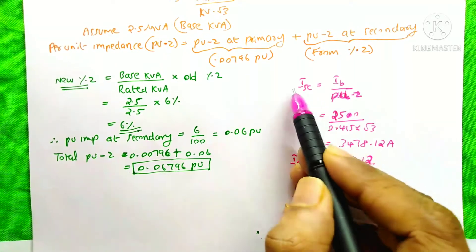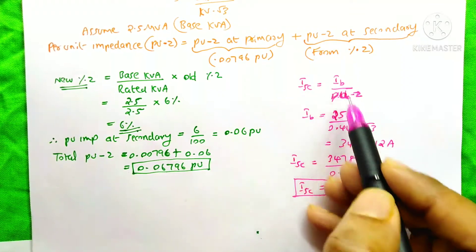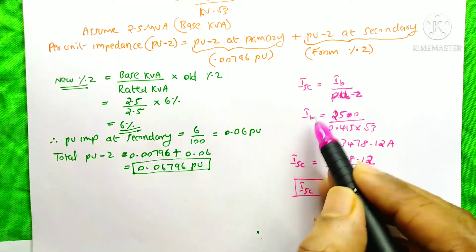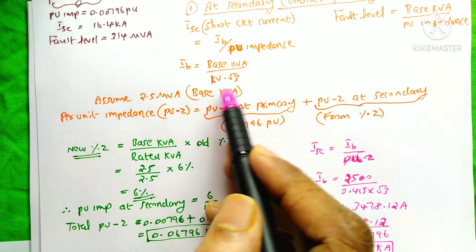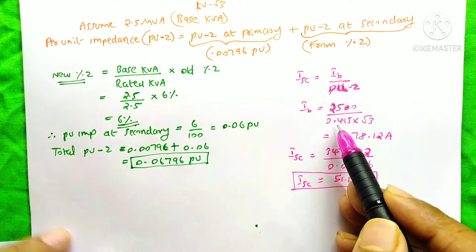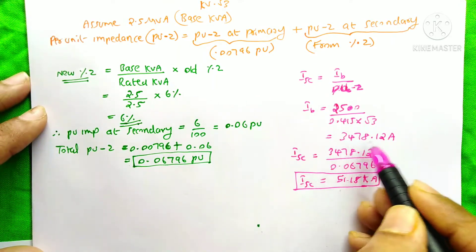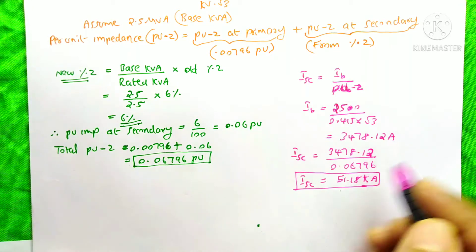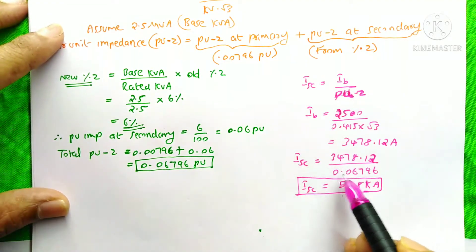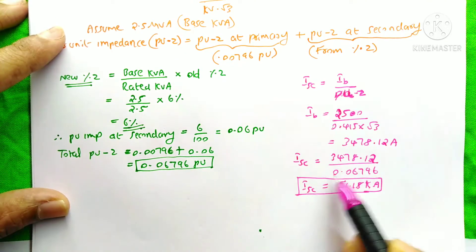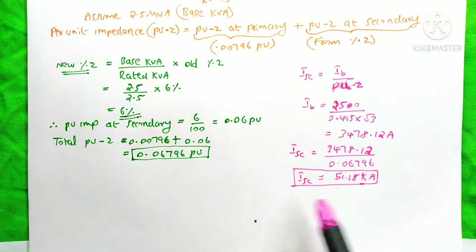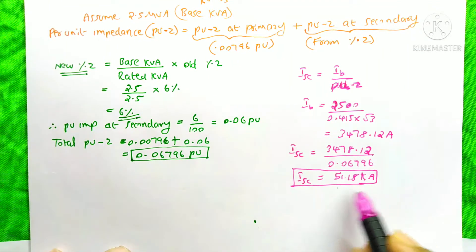For the short circuit current, ISC equals IB divided by per unit impedance. First, we find the base current IB: base kVA divided by kV into root 3, that is 2500 divided by 0.415 into root 3, which gives 3478.12 Amps. Then the short circuit current ISC equals 3478.12 divided by 0.06796, and the answer is 51.18 kilo Amps.